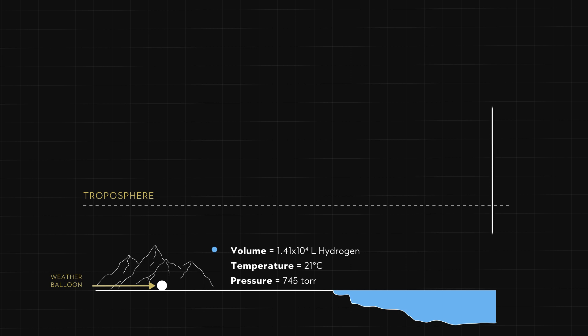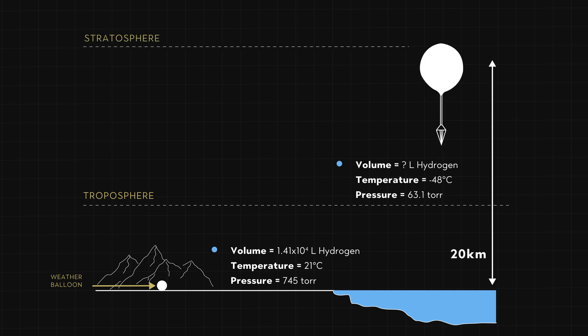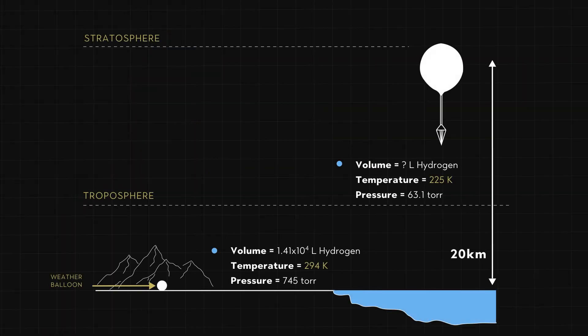The decreasing pressure increases the volume by more than a factor of 10. As the balloon rises, the temperature also drops from 21 degrees to minus 48 degrees Celsius. As the temperature decreases, the volume will also decrease, so volume is directly proportional to temperature. This proportionality requires that we use temperature in Kelvin, so our temperature has decreased from 294 Kelvin to 225 Kelvin.